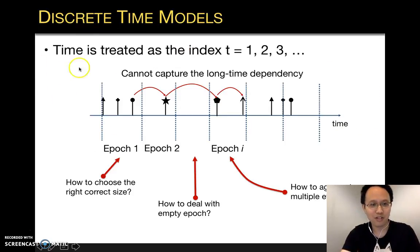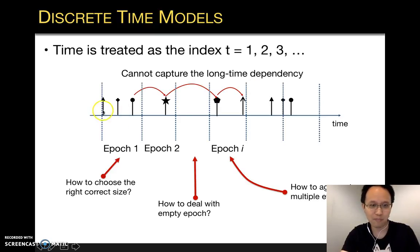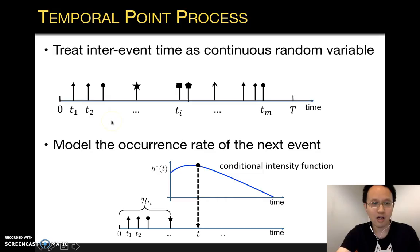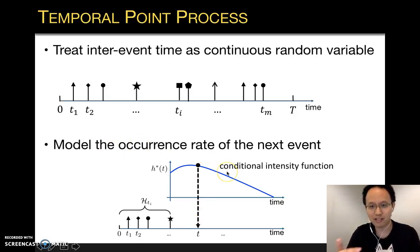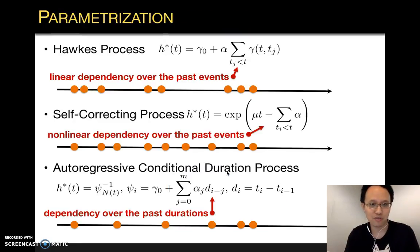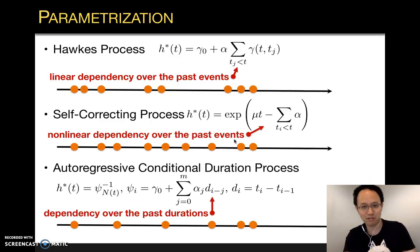To solve these problems, classic time series analysis methods and Markov-type models treat time as an index of unit-size epoch, so they cannot capture the long-time dependency and the heterogeneity of inter-event durations. Alternatively, temporal point process is a more general mathematical framework, treating inter-event time as a continuous random variable and modeling the occurrence rate of new events using a conditional intensity function. Parametric assumptions about the functional form of the conditional intensity function and the dependency structure over past events are often made to encode prior knowledge and belief about the unknown temporal dynamics.